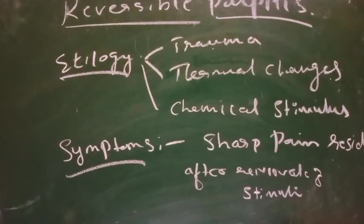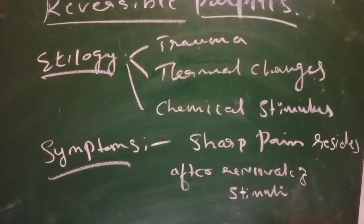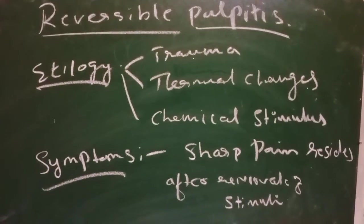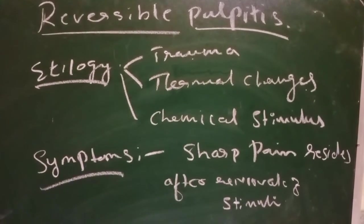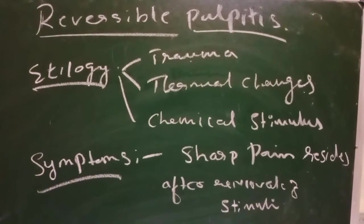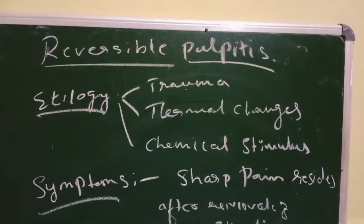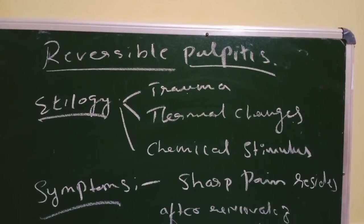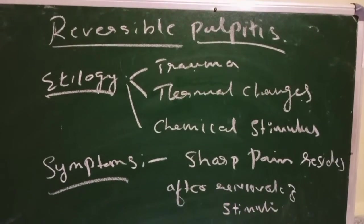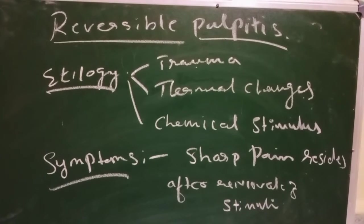For symptoms, the patient may complain of pain — a short, sharp pain that resides after removal of the stimuli. For example, if any sweet or hot thing touches the particular tooth, the patient may get pain. That is reversible pulpitis.